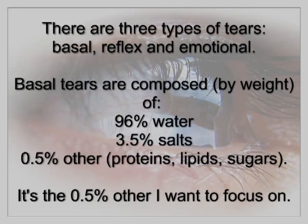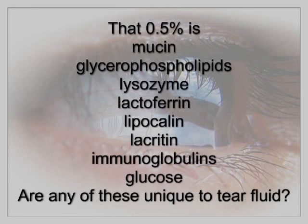Basal tears are composed by weight of 96% water, 3.5% salts, and 0.5% other. It's the 0.5% other that I want to focus on. That 0.5% is mucin, glycerophospholipids, lysozyme, lactoferrin, lipocalin, lacritin, immunoglobulins, and glucose. Are any of these unique to tear fluid?